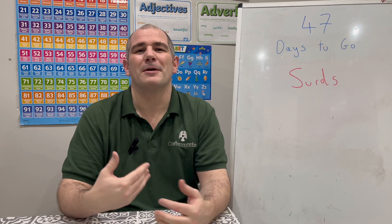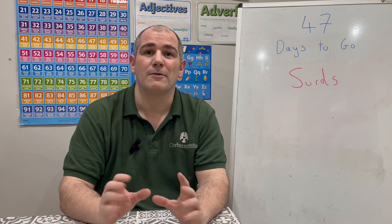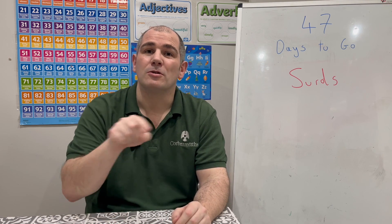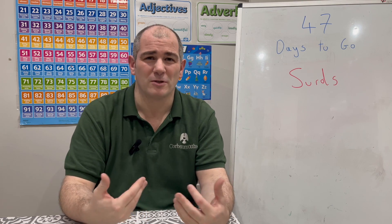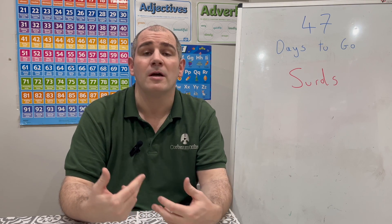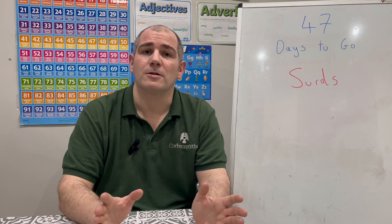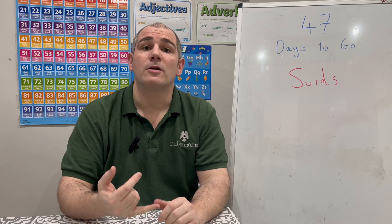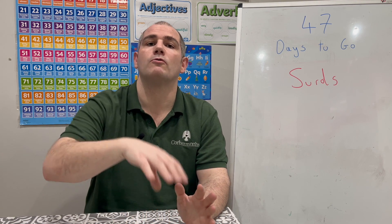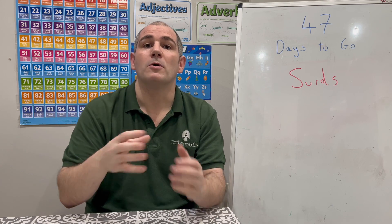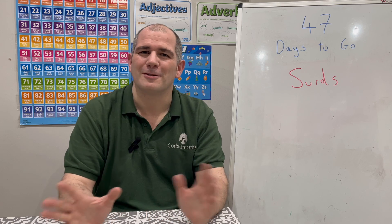We're going to be looking at the different rules whenever we're dealing with surds today — how to multiply them, divide them, simplify them, add them, and also expand brackets with them. There'll be times whenever I get you to pause the video to try some questions yourself. In the description below, we've got practice questions — I highly recommend you try those, particularly if you're aiming for top grades in your higher GCSE Maths. Tomorrow we're going to come back to surds and look at rationalising the denominator, so don't panic if you don't see those questions today.